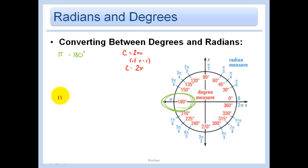The biggest takeaway on this slide is that π radians, and you can just abbreviate that rad, is equal to 180 degrees.